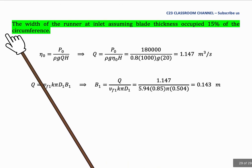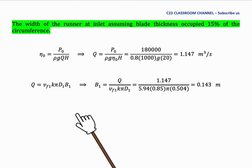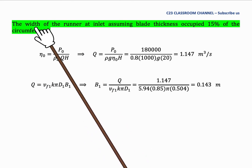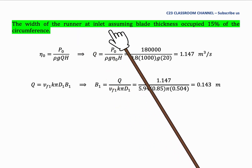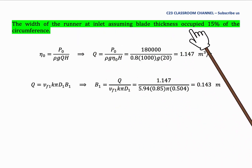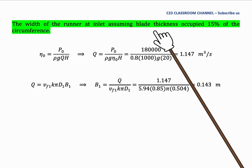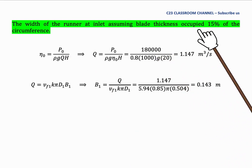The last one, we need to calculate the flow rate. However, in this question the width of the runner at inlet assumes blade thickness occupies 15 percent of the circumference. With this statement, we need to have the value of K.